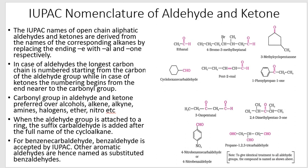You can see the numbering in the example. We start numbering from the CHO carbon - 1, 2, 3, 4, 5, 6, 7.